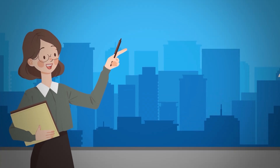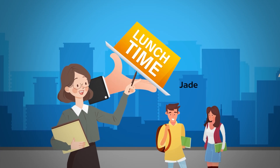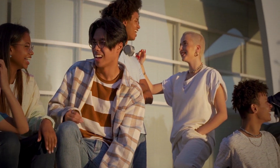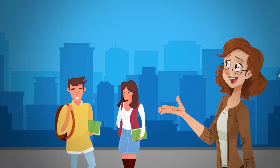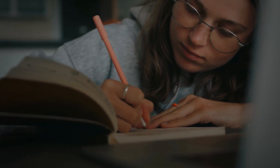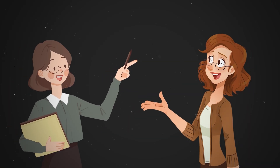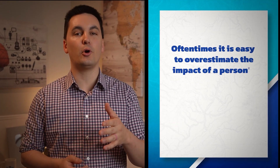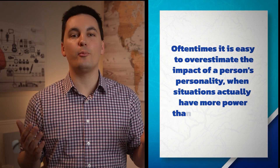For instance, say one teacher only sees the student Jade during lunch time. During lunch, Jade is always talking and laughing with her peers, so the teacher assumes Jade is outgoing and more of an extrovert. However, another teacher has Jade in class, and during class Jade doesn't talk or participate with her peers, so that teacher assumes Jade is shy and more of an introvert. Later in the day, the two teachers get together and realize they have completely different ideas about who Jade is. Notice that both teachers focused on disposition and not the situation — they both ignored the power of the situation. Often times it's easy to overestimate the impact of a person's personality when situations actually have more power than you may think.